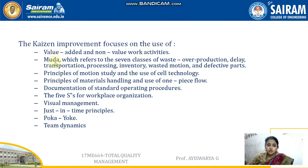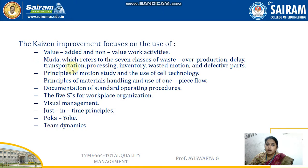The second one is Muda. Muda means waste, which refers to seven classes of waste. The seven categories are: overproduction, meaning producing more products than needed; delay, because of not reaching the destination in proper time; and transportation, where some problem may occur due to poor transport.